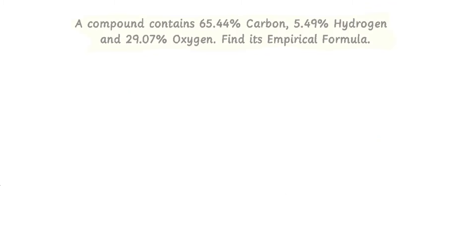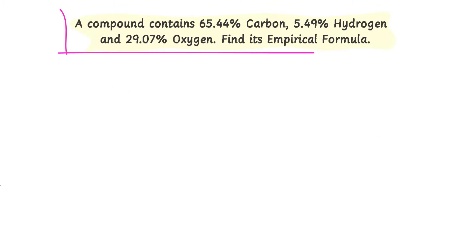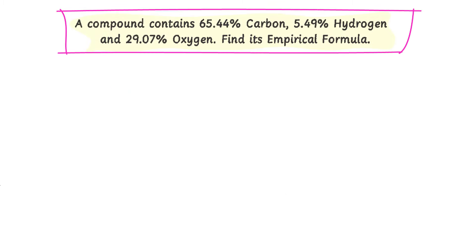Now consider that a compound contains 65.44% carbon, 5.49% hydrogen, and 29.07% oxygen. Find its empirical formula. In this type of numerical, the percentage composition of elements is given.